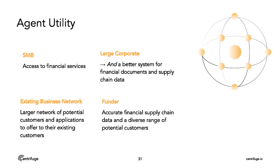The large corporate will get access to these services, but they also get a better system for their financial documents and supply chain data than they have today. Existing business networks — like other invoicing platforms or ERP systems — also like Centrifuge. They don't just see us as someone coming in to replace them, because they get a larger network of potential customers they can offer other types of services to, for example trade credit insurance. A funder gets access to more accurate financial supply chain data and a more diverse range of potential customers. Each of these agents is utilizing the Centrifuge platform in a different way, but they're all getting value out of the network.